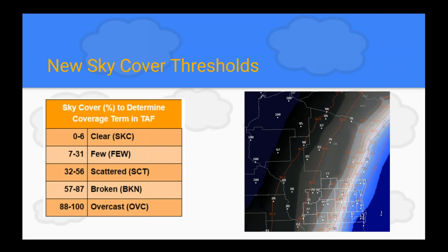Talking about the new thresholds — sky cover — we changed the percentages just a little bit, and this was agreed upon nationally. Now everyone will be on the same page as everyone in the country gets spun up with digital aviation services. Whether they do digital aviation services the way Central Region does or a little differently, we still have the same formatter and the same sky threshold.